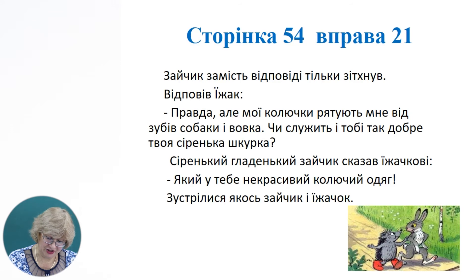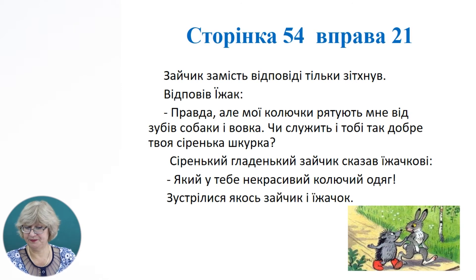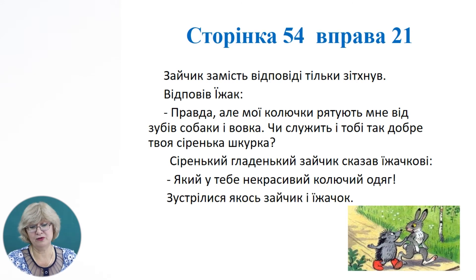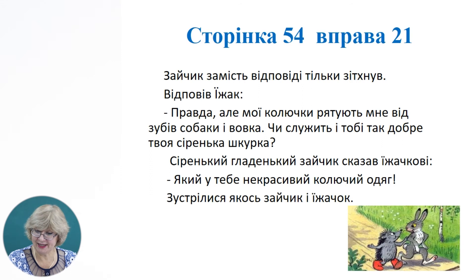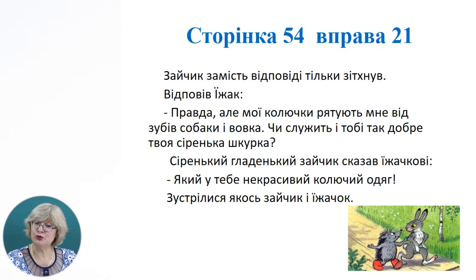Розверніть підручник на сторінці 51, вправа 21. Прочитайте речення і переставте абзаци так, щоб вийшов текст. Прочитаємо речення: «Зайчик замість відповіді тільки зітхнув». «Відповів їжак: Правда, але мої колючки рятують мене від зубів собаки і вовка». «Чи служить і тобі так добре твоя сіренька шубка?» «Сіренький гладенький зайчик сказав їжачкові: Який у тебе некрасивий колючий одяг». «Зустрілися якось зайчик і їжачок». Ви зрозуміли, що тут все переплутано — всі частини переплутано.